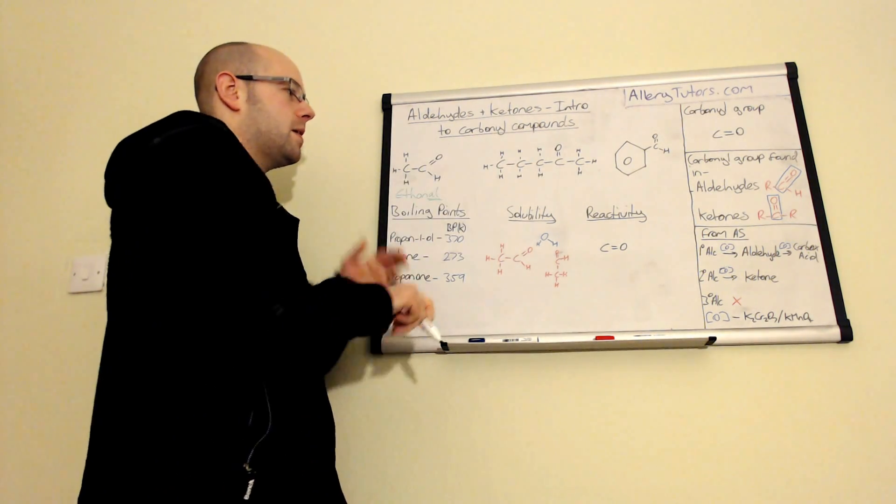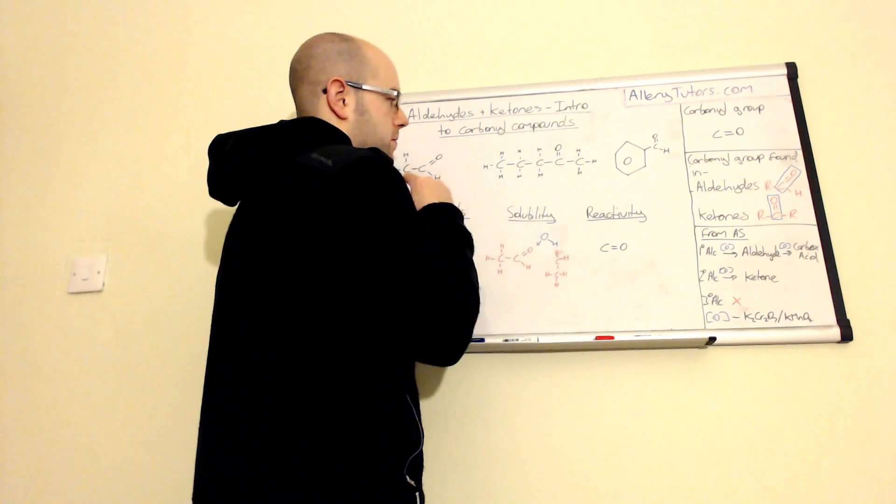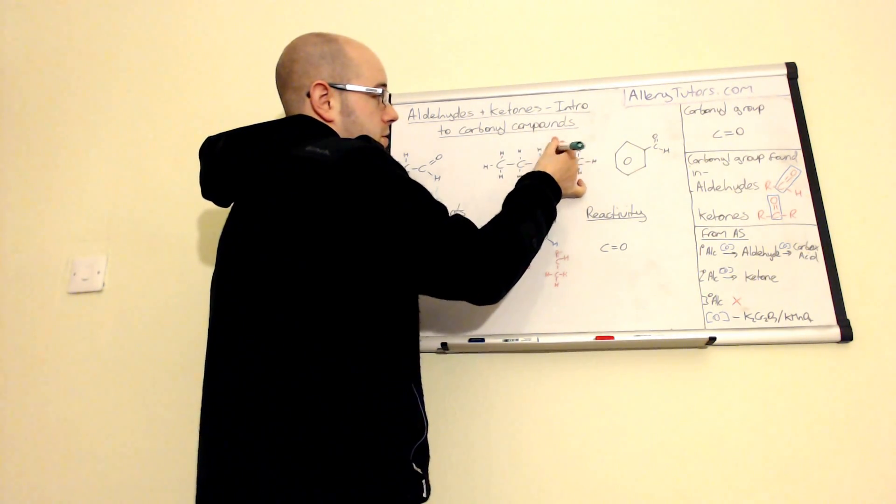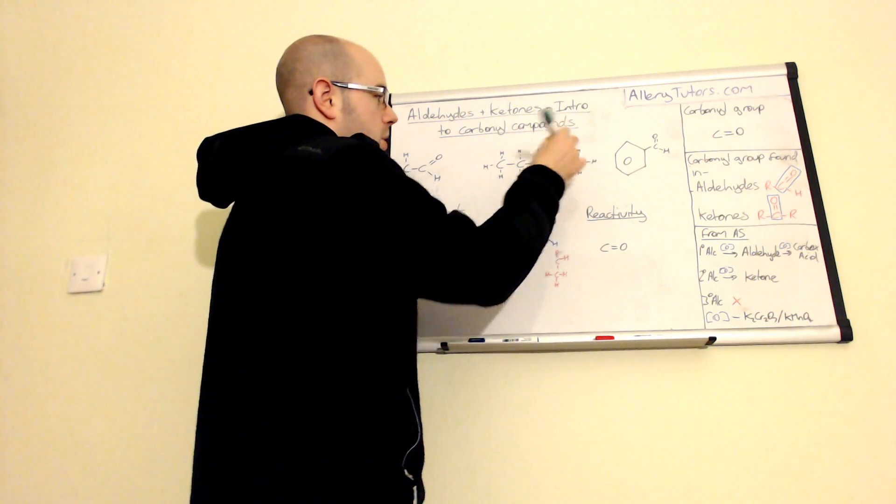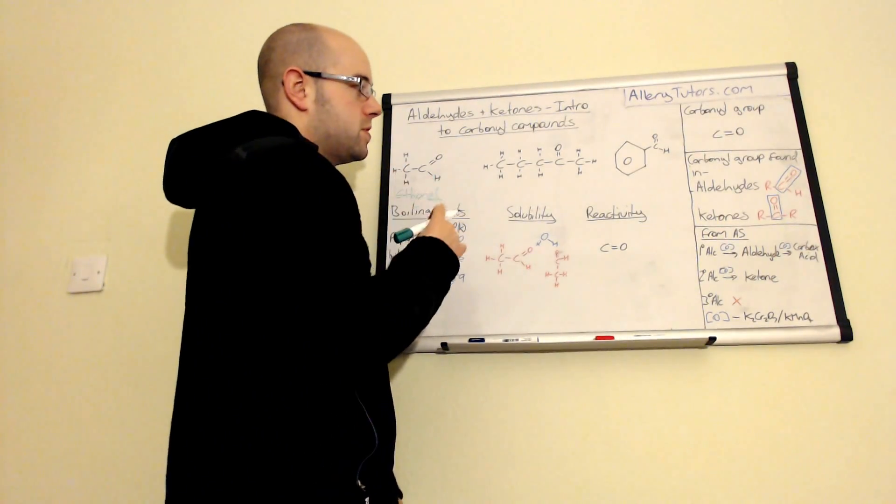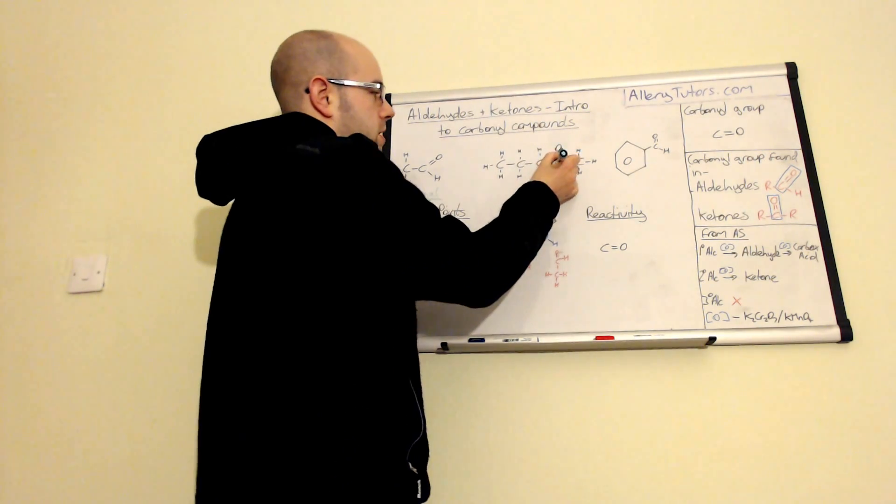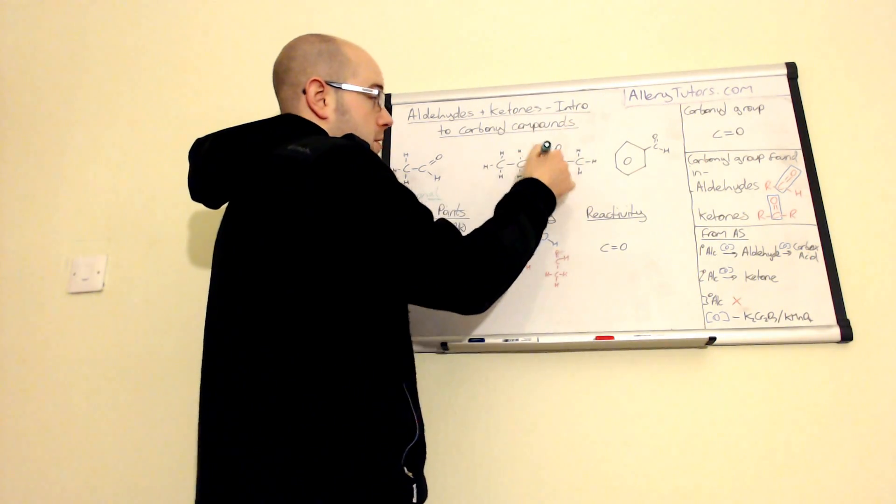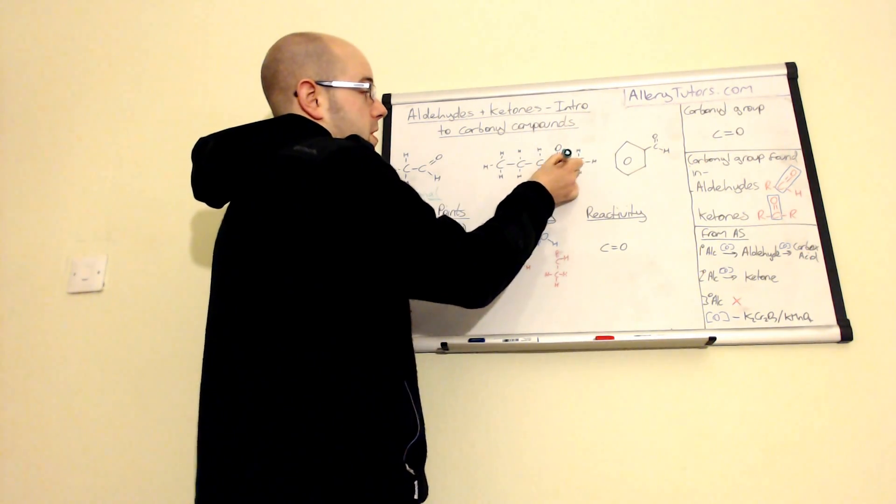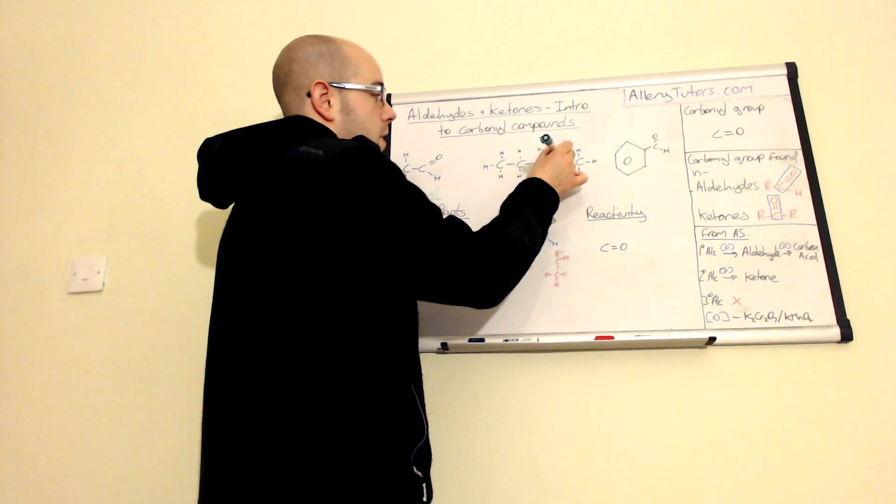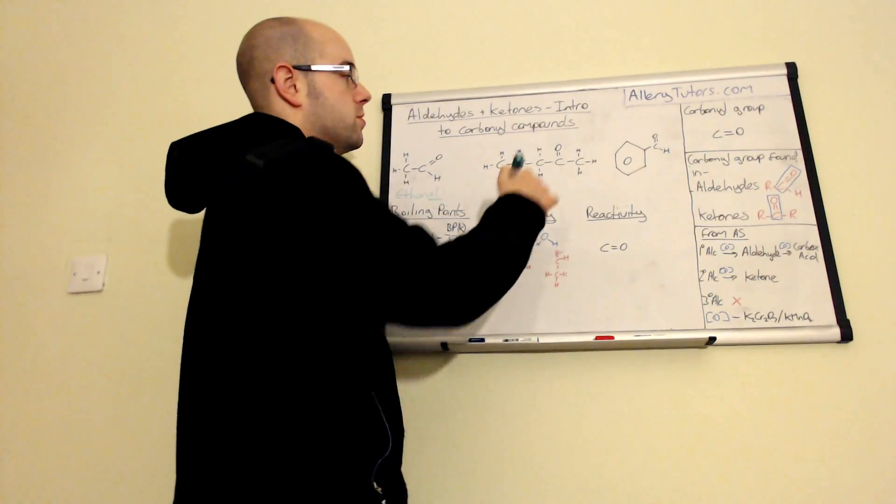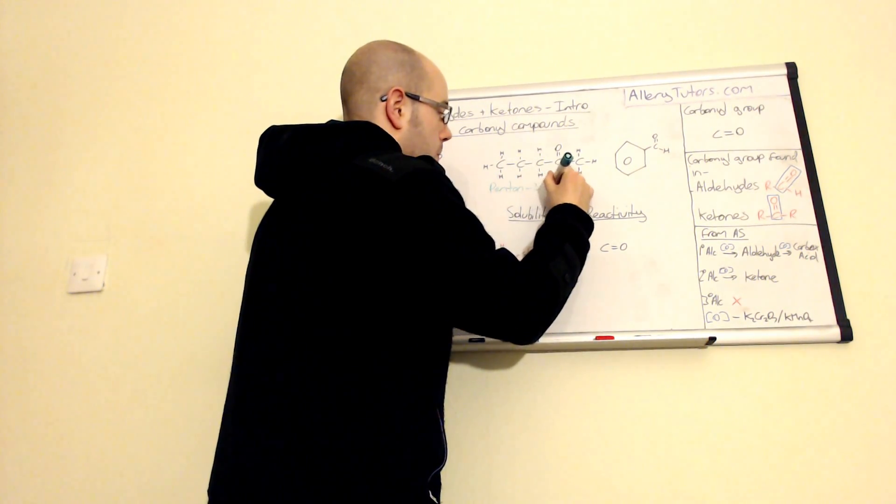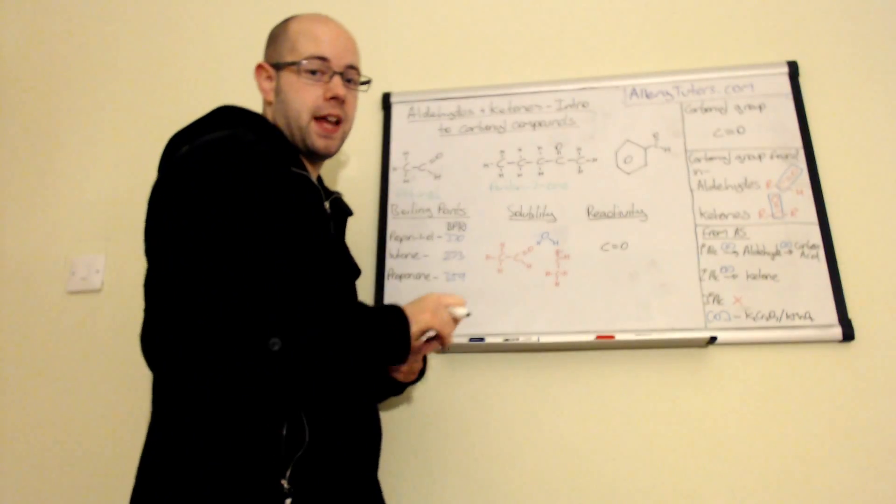We have a ketone over here. This one has got one, two, three, four, five carbons in there, so this one is going to be pent. But this has got a ketone in there, so the ketone's actually in the middle, and we have to name where that ketone goes as well. You can see that this is on the second carbon if we number from this side: one, two, three, four, five. That's the lowest numbering combination that we can have. If we start from here that'll be one, two, three, four, and obviously four is higher than two. So this is actually called pentan-2-one.